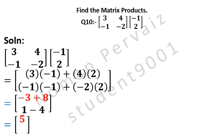This equals: minus 3 plus 8 is 5, and 1 minus 4 is minus 3. Hence this is our answer.